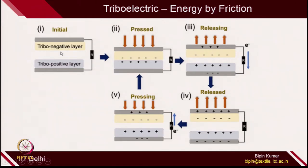Energy harvesting textiles are also made using knitting. Whenever you go for energy harvesting textiles, you need two types of materials — one is a triboelectric-negative material and one is a triboelectric-positive material. If you apply pressure on this, energy is generated. Usually, polytetrafluoroethylene yarn and nylon yarns are most suitable. Polytetrafluoroethylene is the triboelectric negative layer; nylon is the triboelectric positive layer. If you make two types of knitted fabric — one positive and one negative triboelectric material — and you rub them or apply some pressure, electricity will be generated and you can harvest it.